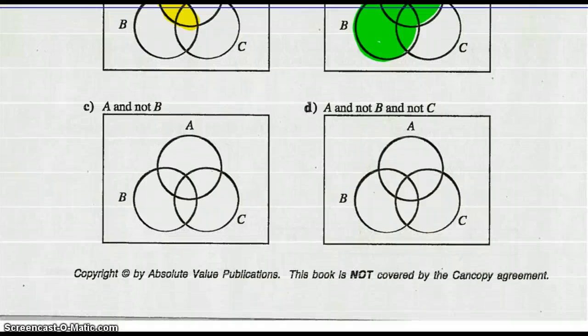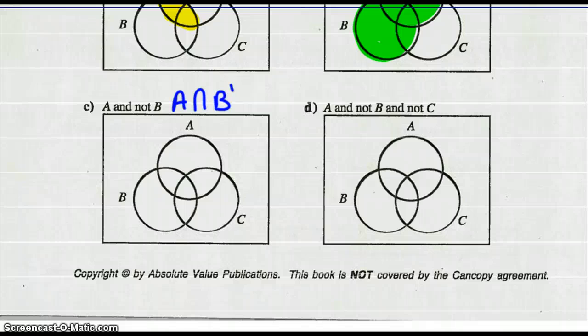Part C: A and not B, so A intersect not B. We need all the parts of A that are not B — that would be the portion of A that lies outside the intersection with B.